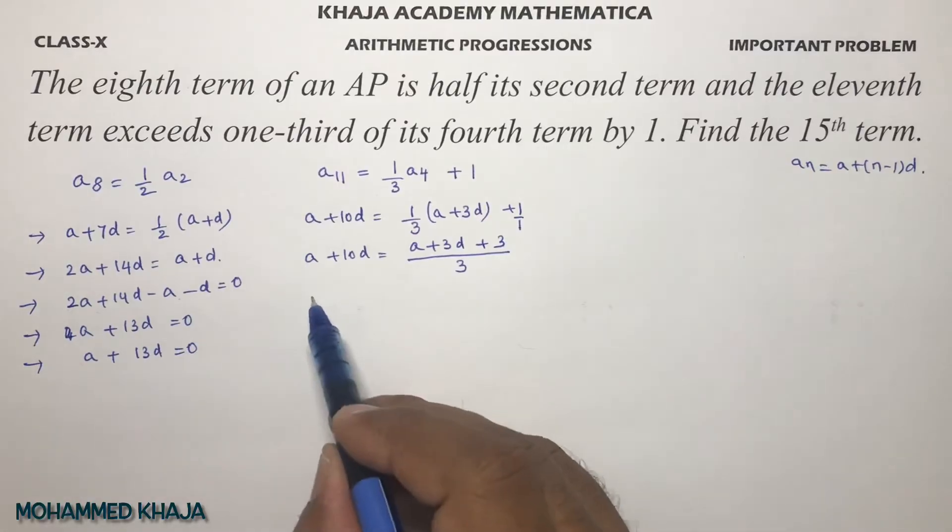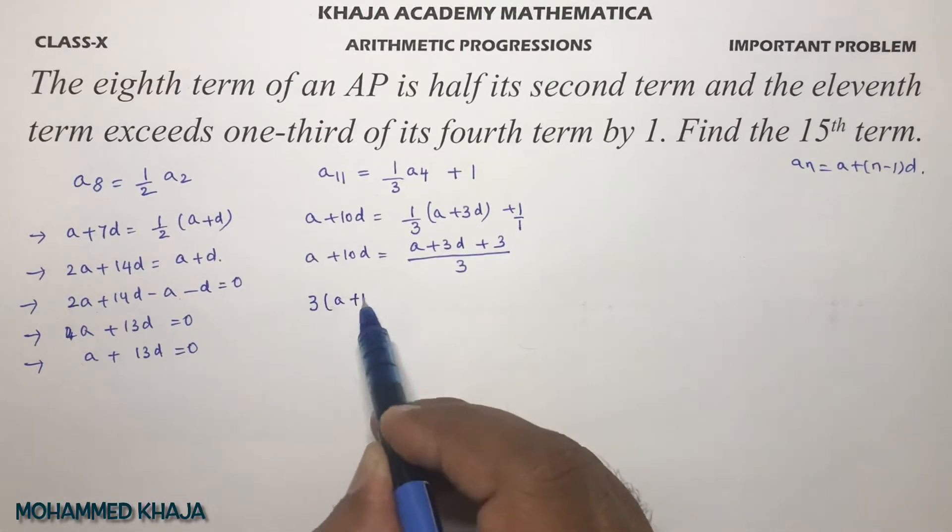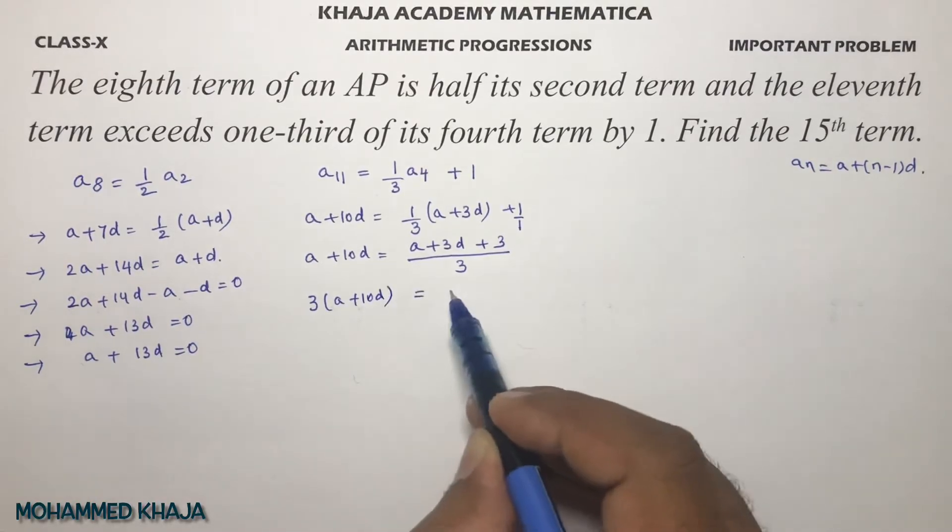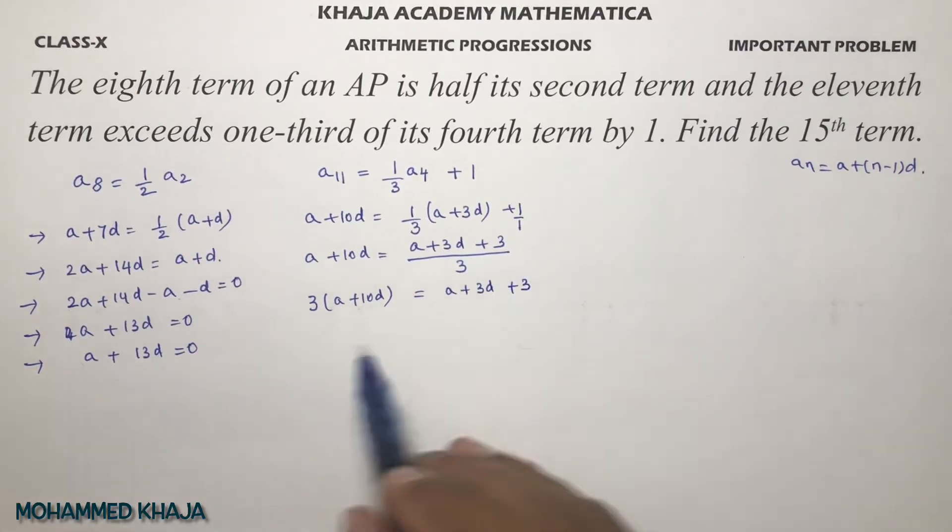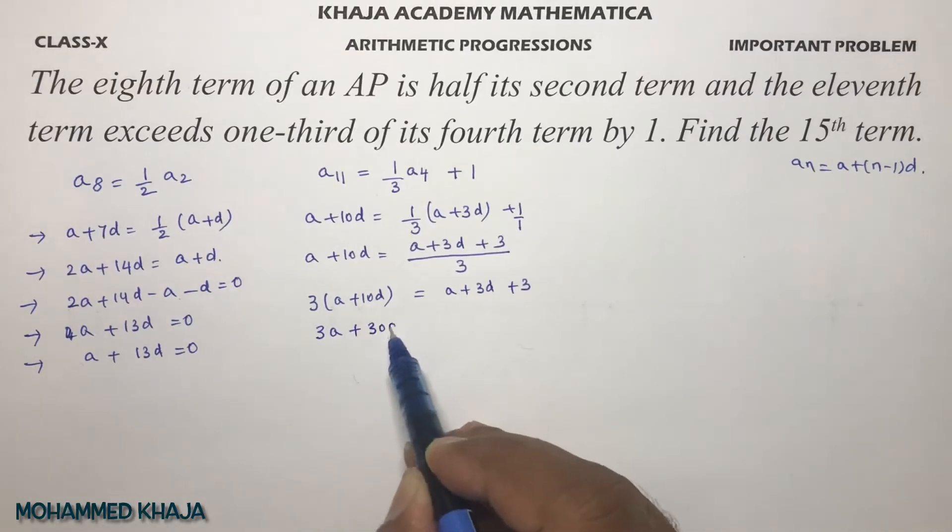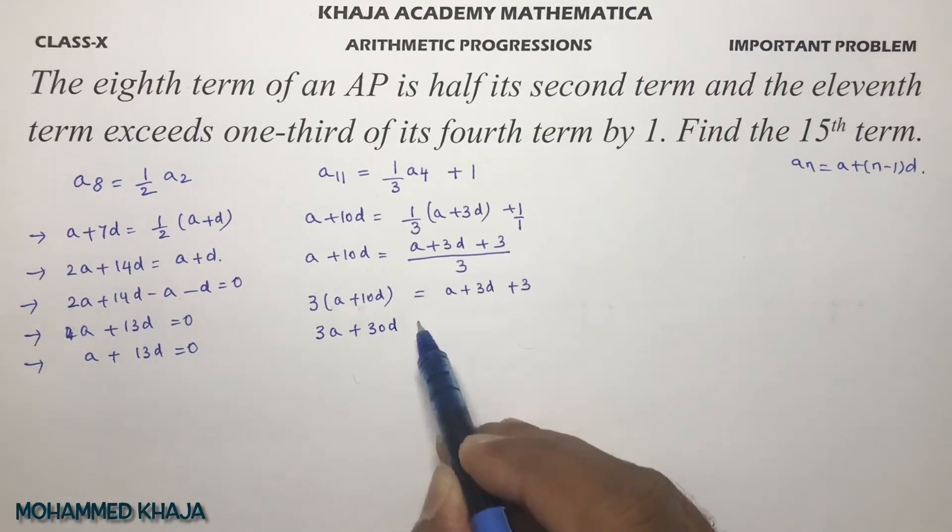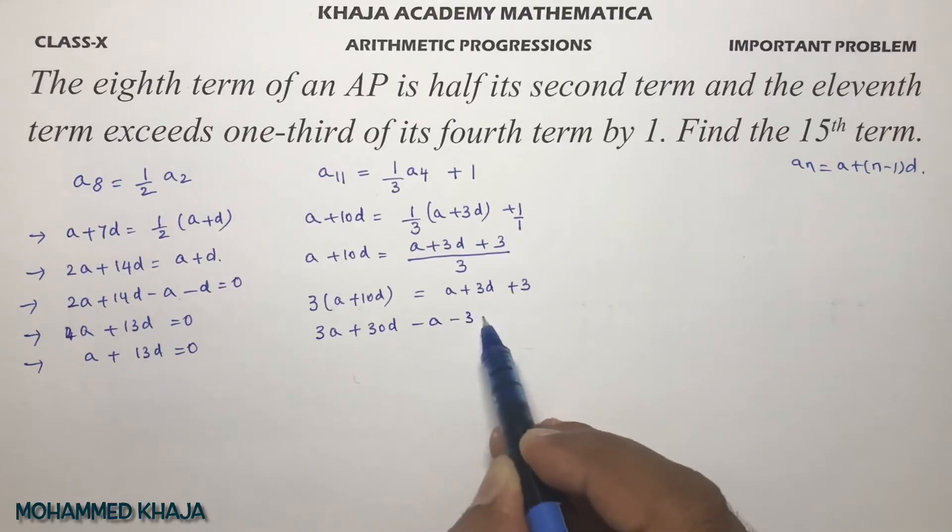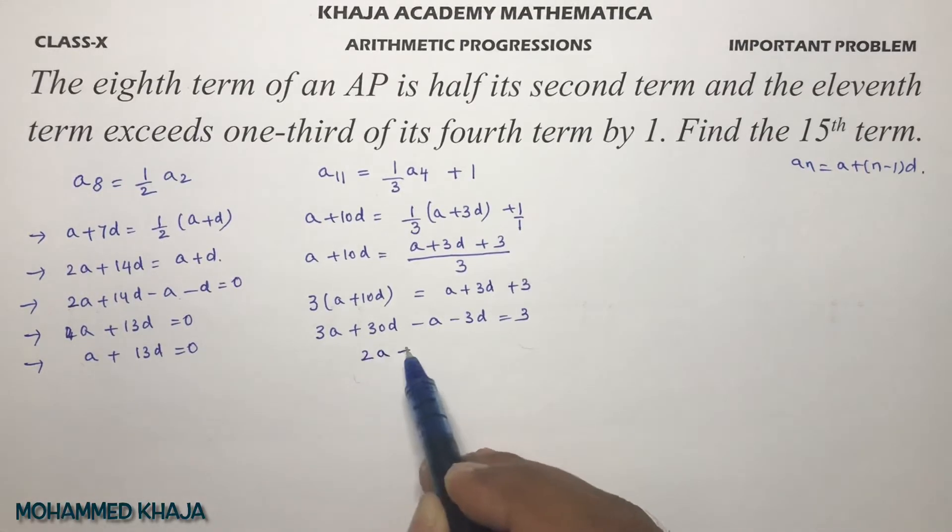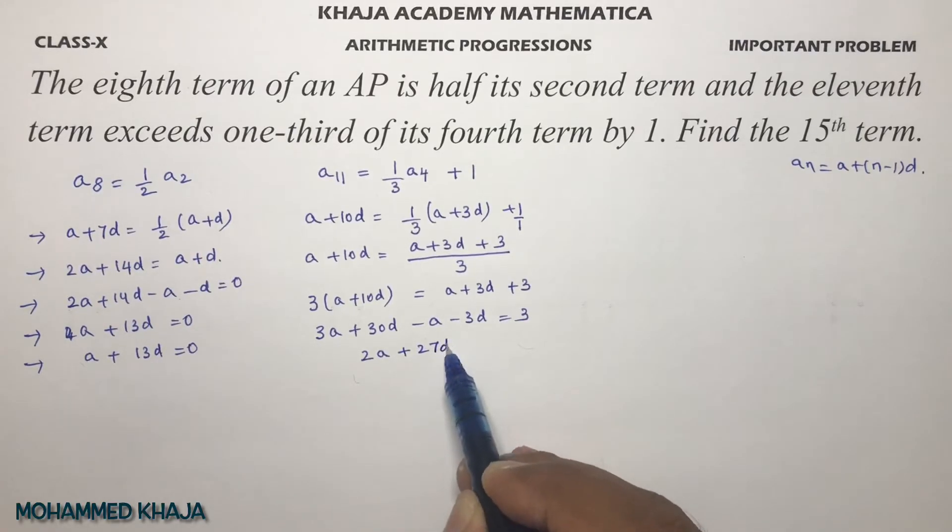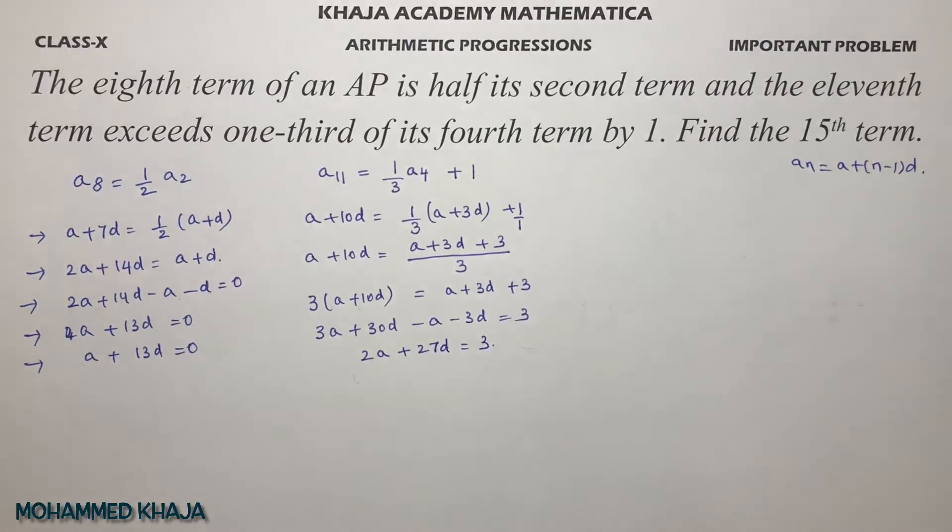Cross multiply: 3 times (a plus 10d) equals a plus 3d plus 3. This gives 3a plus 30d. Transpose these values: 3a plus 30d minus a minus 3d equals 3. Simplifying: 3a minus a is 2a, and 30 minus 3 is 27d, so 2a plus 27d equals 3.